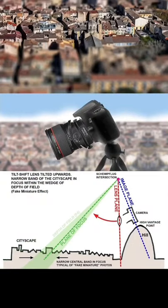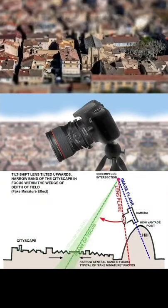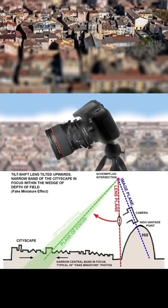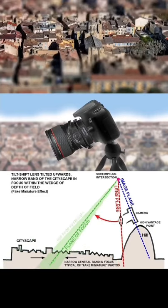You can decide where to focus the band by using the tilt function or turning the focus ring on the lens.